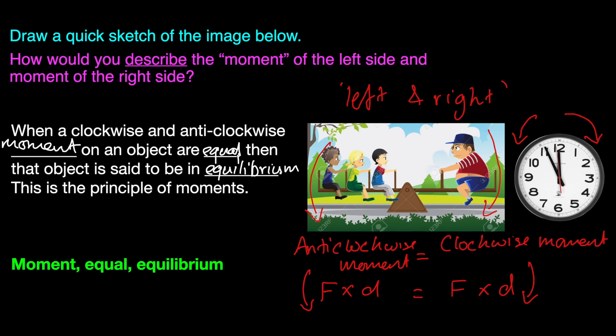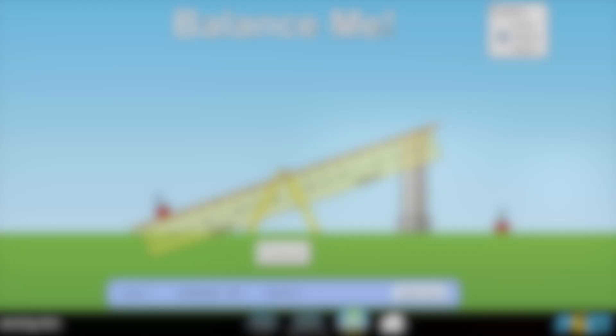Let's take another look at how moments work in the world around us. This is an animation game in which we have to balance out this system. How do you think we could do that? We have a 10kg mass to balance out the 10kg mass here. Where should we place it?